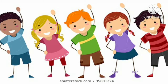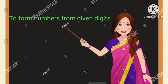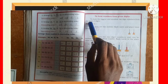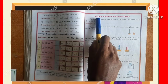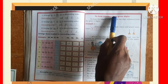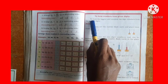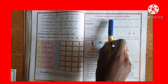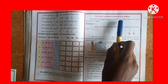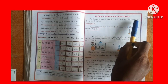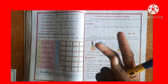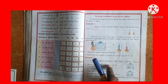Hi children, today we are going to learn how to form numbers from given digits. To form the biggest and smallest 2-digit numbers from the given digits.